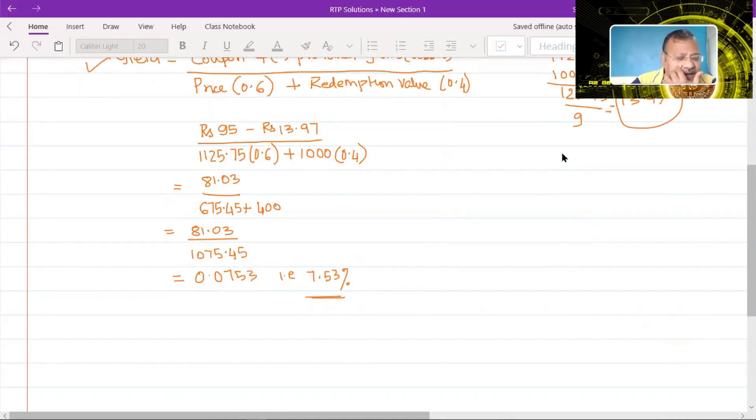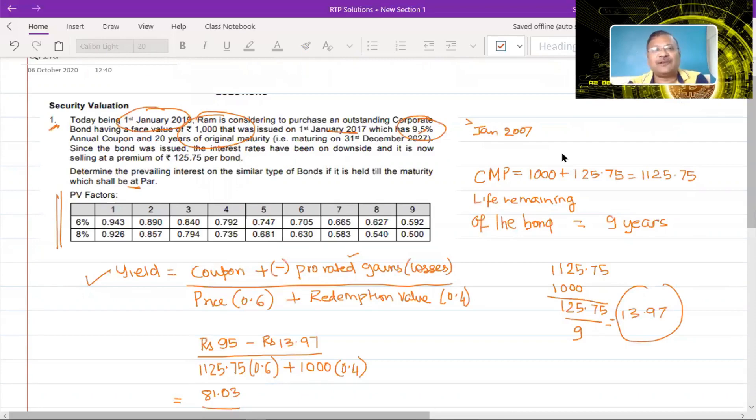Now if you check the institute answer, they have got by interpolation an answer of 7.55 and this 0.02% is very well accepted margin of error in sums which involve rounding off. So this is the solution for question number 1 of the RTP for November 2020.